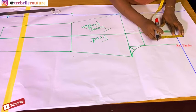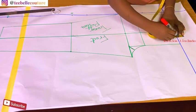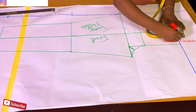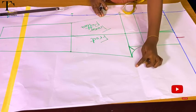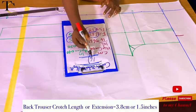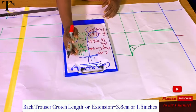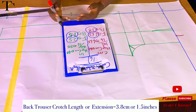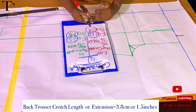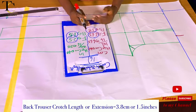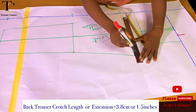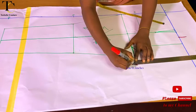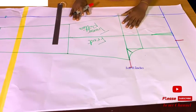Then go up by maybe 1.5 to two inches — that is four to five centimeters respectively — whichever way is convenient for you. The next is to mark my crotch extension for the back trouser pattern, still using my hip-divided-by-16 method. The standard for the back pattern using the 16 division method is to use either 3.8 centimeters or 1.5 inches, and that is what I marked at that angle.